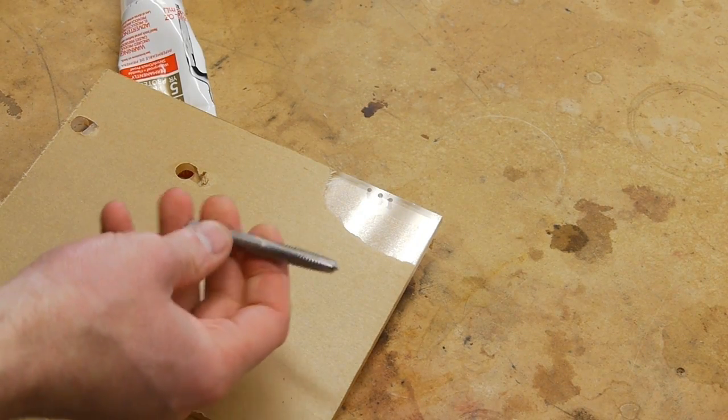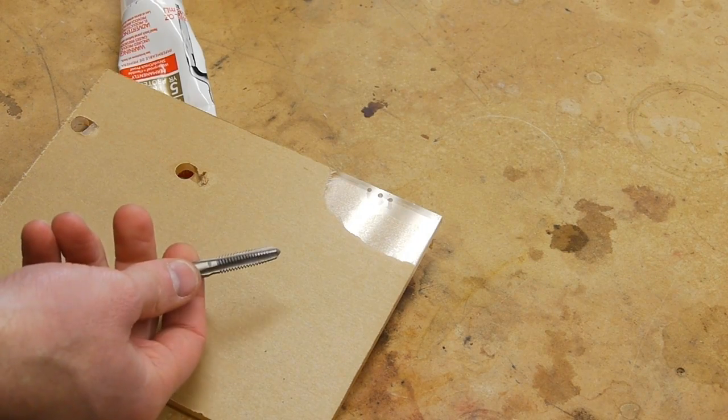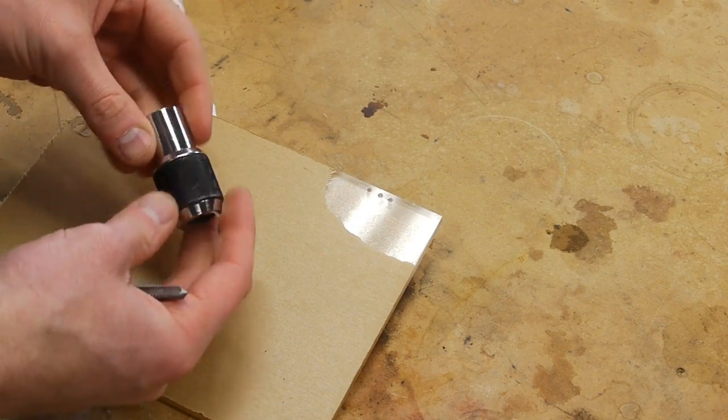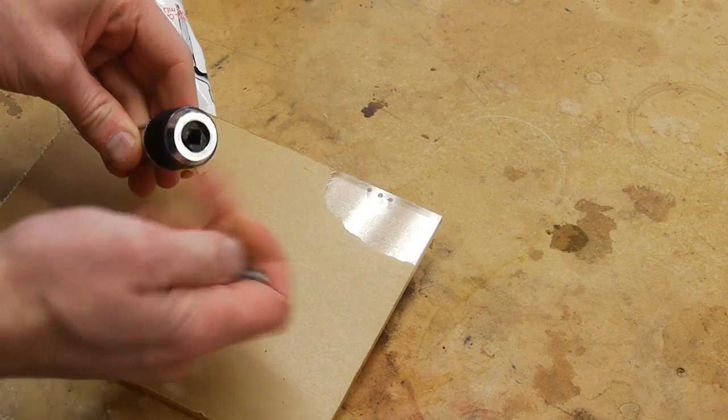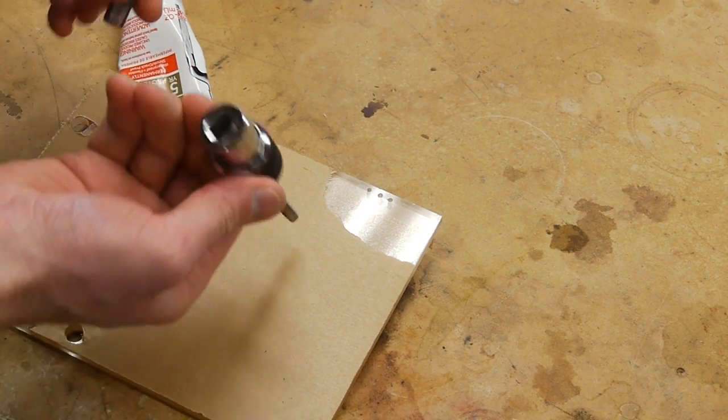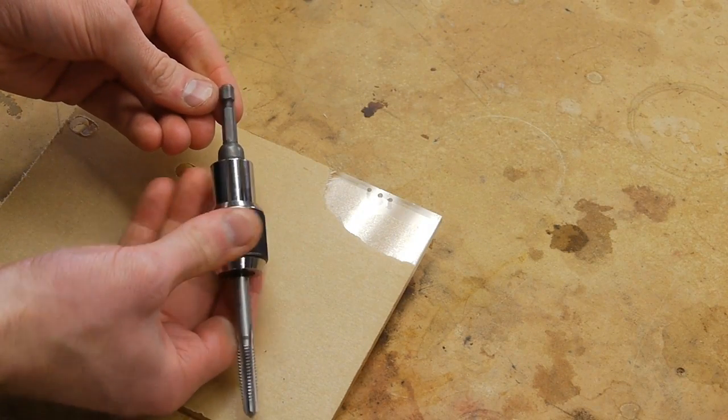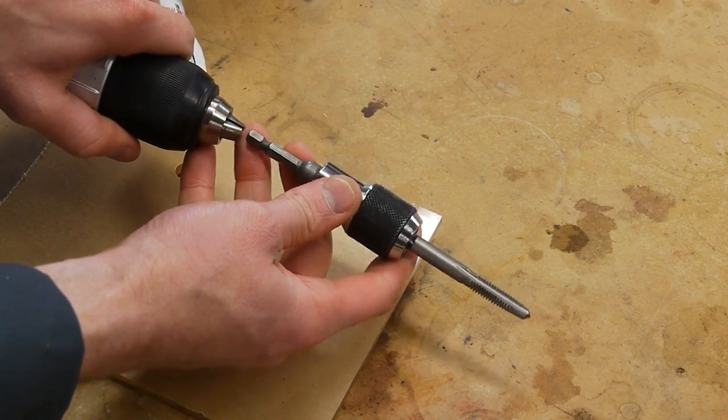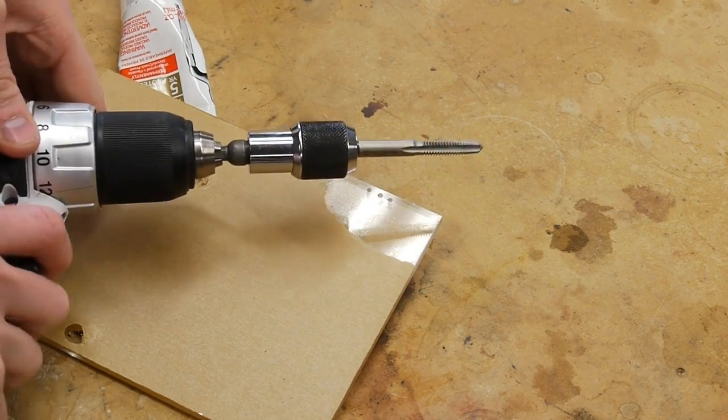For larger taps like this, you'll find that gripping it in the drill chuck may not work. It may actually spin because the torque required is just too high. So then what you can do is get one of these tap wrenches, this one's made by Irwin. You put the tap in this side, and on this side it's got a 3/8 square drive. So then I put in a quarter inch hex to 3/8 square drive adapter, and then put the quarter hex into the drill chuck.